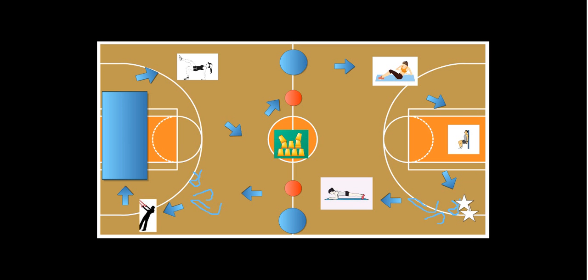Obviously by those little squiggly lines, these are just jump ropes. They can either do forward, backward, crisscross jump roping station. Again, if they need to take a break they can, and they try to go for a minute and a half. Then on the signal they would follow the arrow again.